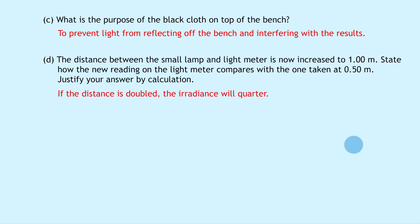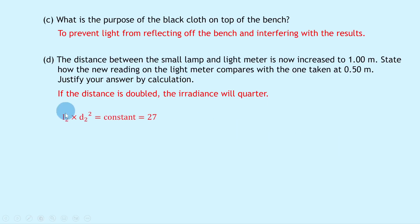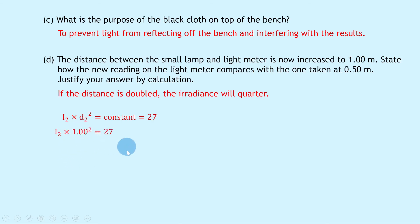To justify by calculation: from the table, at d₁ = 0.5 meters, I₁ = 108 units. The second distance is d₂ = 1.00 meters. Using I₂ × d₂² = constant ≈ 27 (found in part b): I₂ × 1.00² = 27, so I₂ = 27 units.